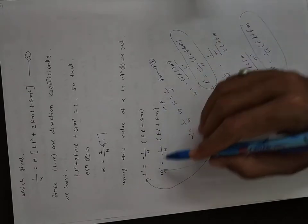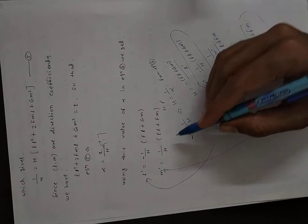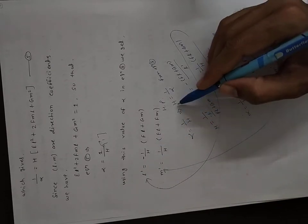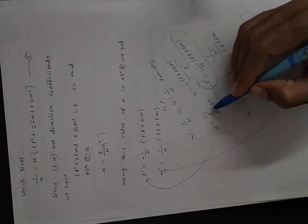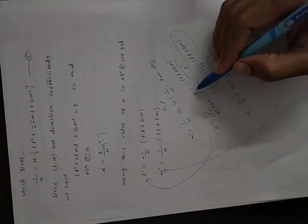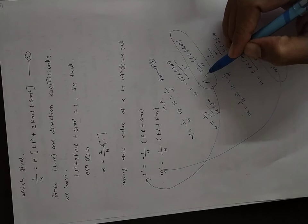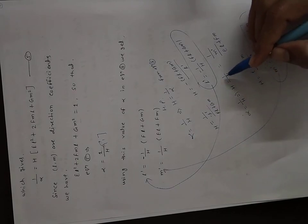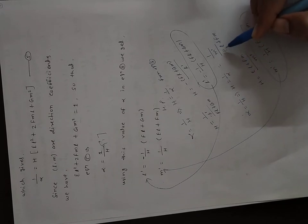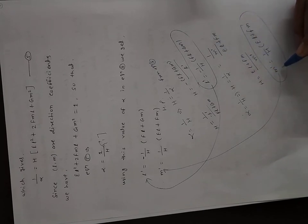Using α = 1/H in equation 3, we get L' = −(1/H)(FL + GM) and M' = (1/H)(EL + FM). Hence proved.